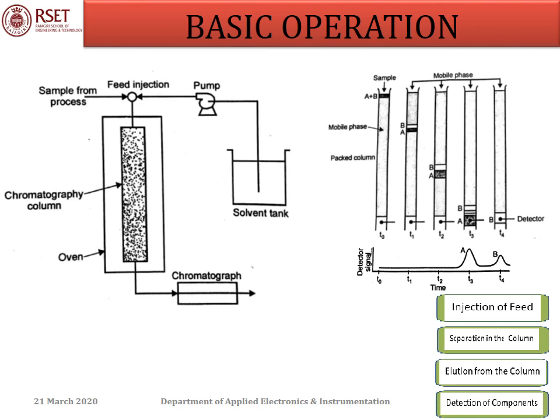Elution from the column: After the sample is flushed or displaced from the stationary phase, the different components will elute from the column at different times. The components with least affinity for the stationary phase will elute first, while those with greatest affinity for the stationary phase will elute last.